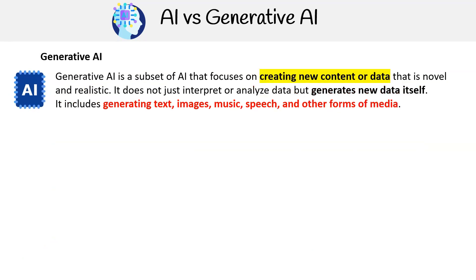On the other hand, generative AI is a subset of AI that focuses on creating new content or data that is novel and realistic. It does not just interpret or analyze data but generates new data itself. It includes generating text, images, music, speech, and other forms of media.